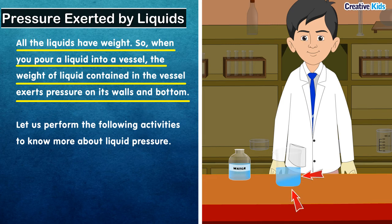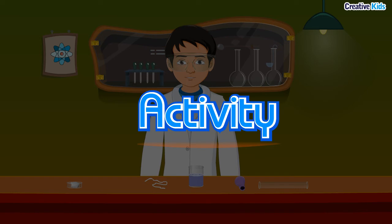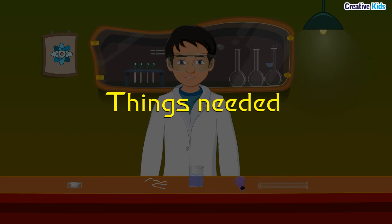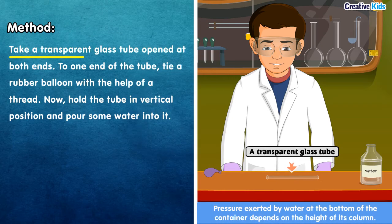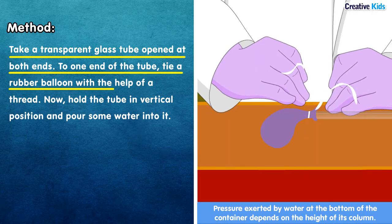Let us perform various activities to know about liquid pressure. Activity aim: to show that liquids exert pressure on the base of the container. Materials needed: a transparent glass tube open at both ends, a rubber balloon, thread, and water. Take the transparent glass tube and tie a rubber balloon to one end with thread.